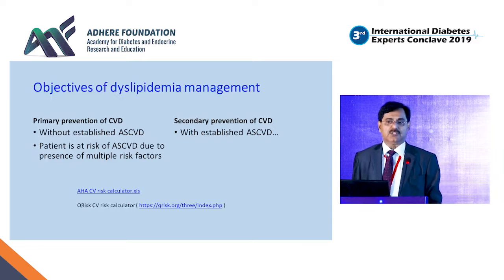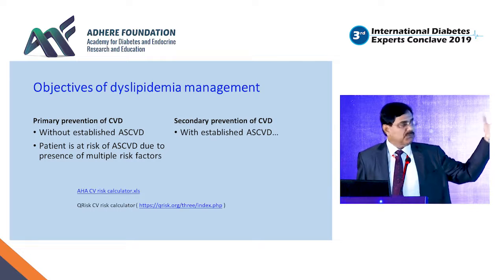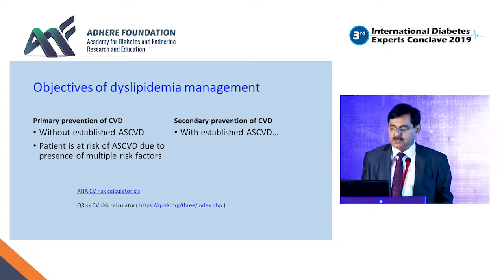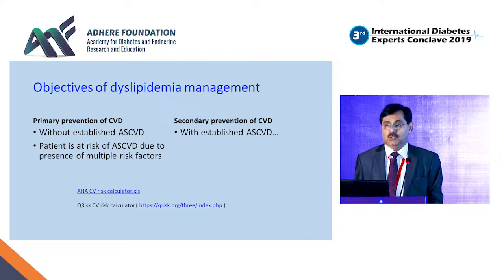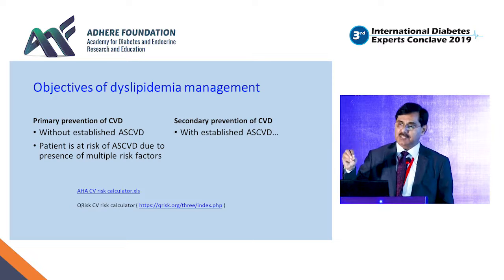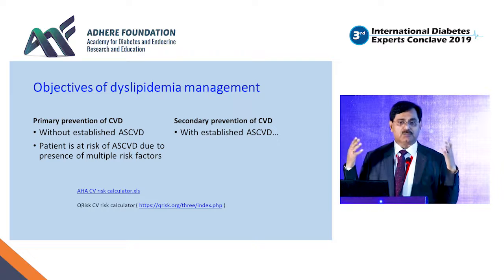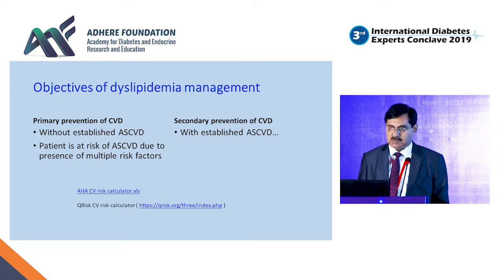Why should we treat dyslipidemias? Primary prevention is important, but secondary prevention once you have vascular disease is much more important. Today, diabetes is actually considered to be a vascular disease, and if a diabetic patient sustains a vascular episode, the risk is much more aggravated.